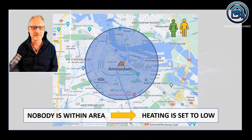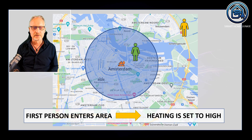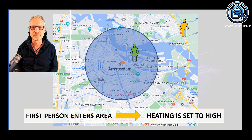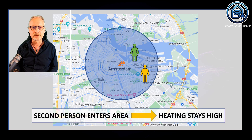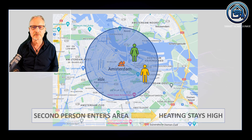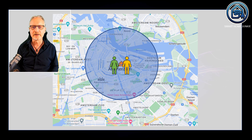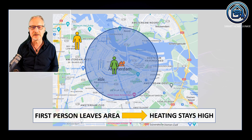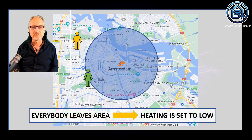Let's go through the first use case. Nobody is within the area, so the heating of your house is set to low. Now, one person enters the area and you want to heat up your house already, so the heating is set to high as soon as this person enters the area. Another person is entering the area and the heating should stay high because that person is also a member of your family. They are both at home and it is really cozy because the temperature is high. Now, one person is leaving the area, but the temperature should still be high, so the heating stays high. And now the other person is leaving the area and then the heating should be set to low.